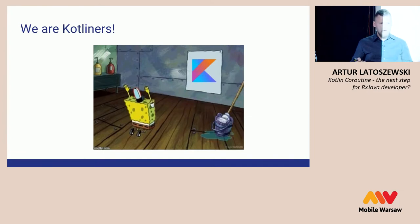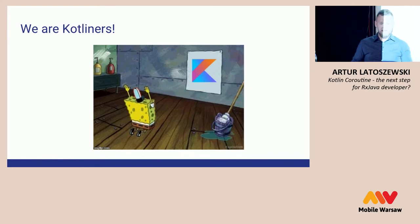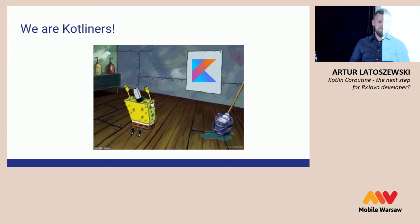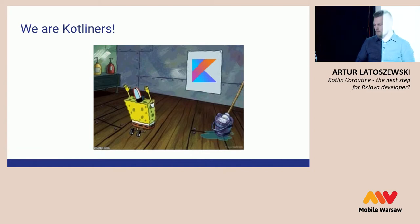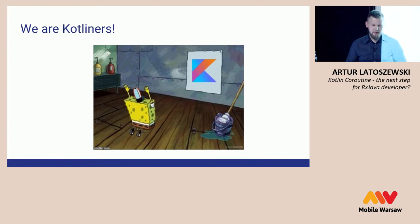RxJava was based on threads underneath, but it gave us a very powerful API to minimize callbacks. But why do we need something else? If RxJava is such a silver bullet — well, because we are Kotliners. We love Kotlin. We want something that was created for Kotlin, not for Java. There is RxKotlin, but it is only an extension for RxJava and it doesn't use the real mechanisms of the Kotlin language. So maybe we should find something similar to RxJava in Kotlin — but do we really need RxJava?